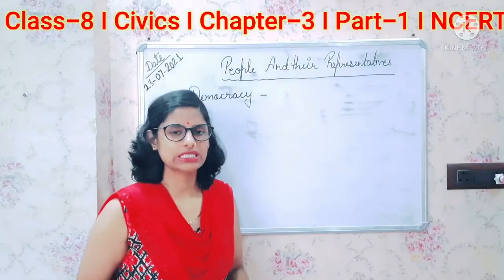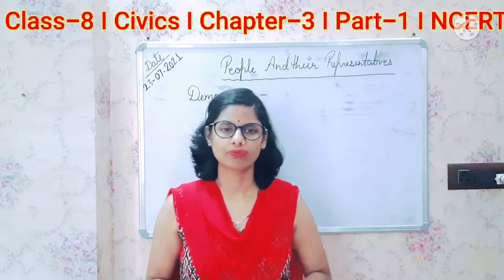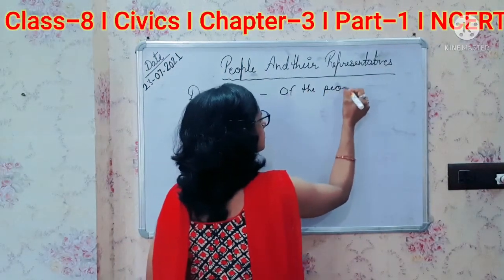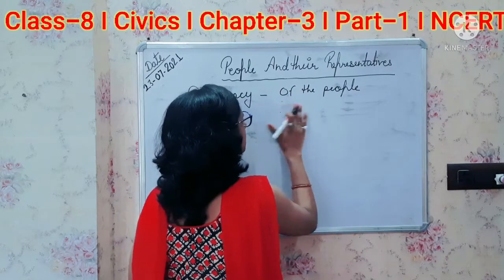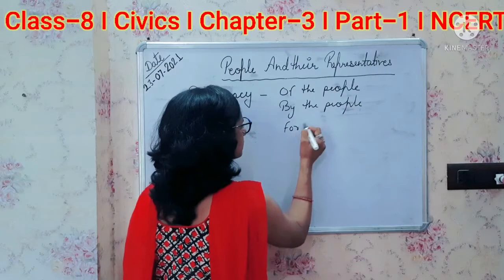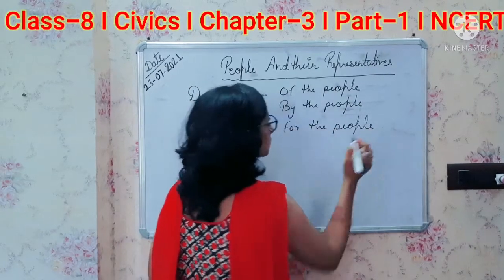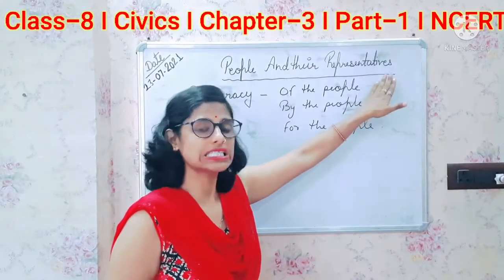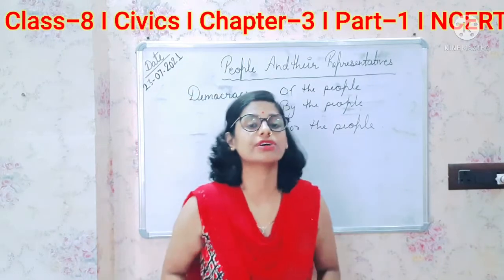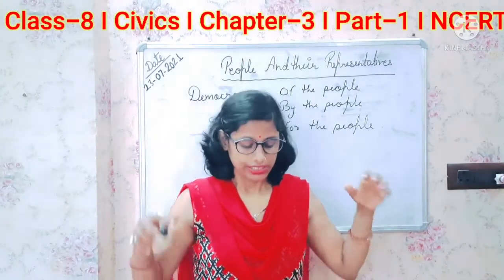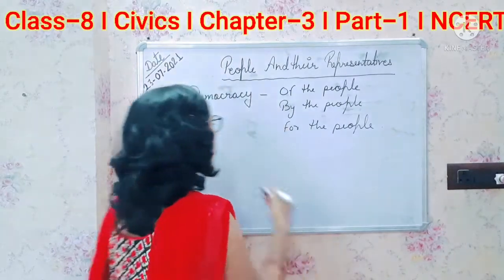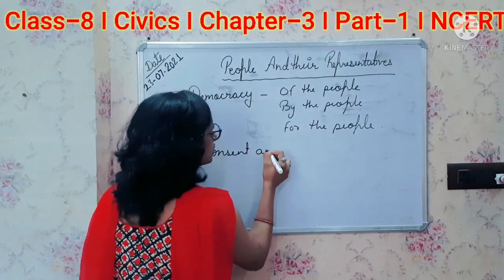As Abraham Lincoln said, democracy is of the people, by the people, and for the people. 'Of the people' means democracy serves the people; the elected representatives are chosen 'by the people' and it serves 'for the people.' Ultimately, democracy revolves around the people and depends entirely on the consent and participation of the people.